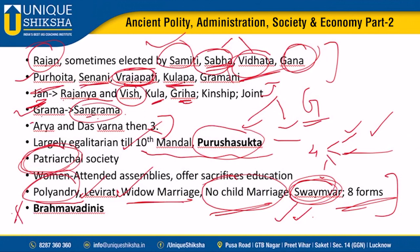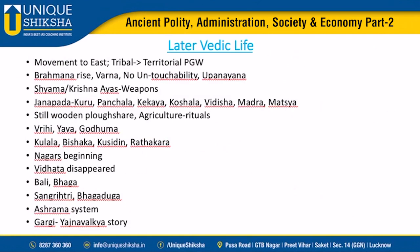Eight forms of marriage are mentioned in Vedic texts, including Deva marriage and Paishacha marriage - marriage by abduction - as well as marriage by giving a dowry or gift to the bride's father. Brahavadinis are very important - these are women who composed Vedic hymns. Gargi confronted the sage Yajnavalkya in philosophical debate. Other Brahavadinis include Lopamudra wife of sage Agastya, Maitreyi wife of sage Yajnavalkya, Apala, Ghosha, and Sachi.